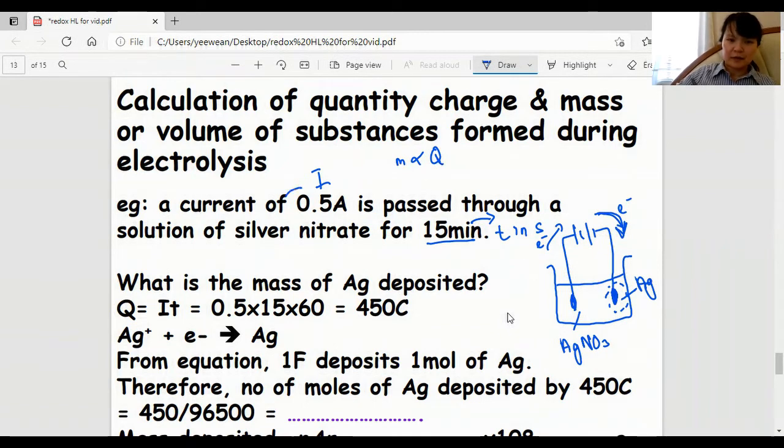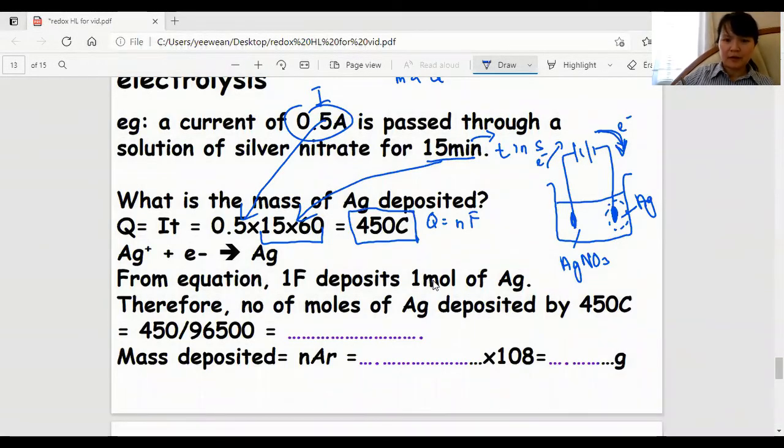Q equals IT. We have our I and T converted to seconds, so this is my Q, the number of coulombs that pass through this circuit. Since Q also equals NF, remember this N is the mole of electrons, not the mole of product formed. In this equation, it's one to one, so we can do it simply.